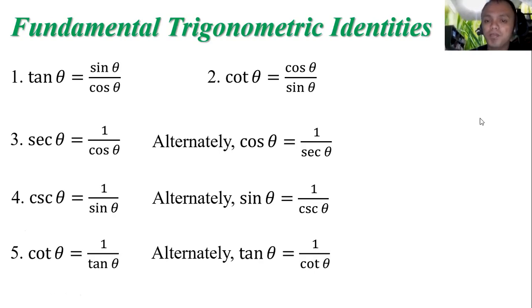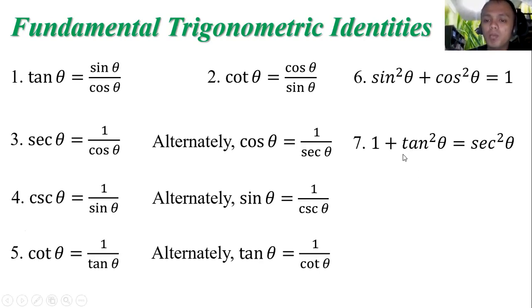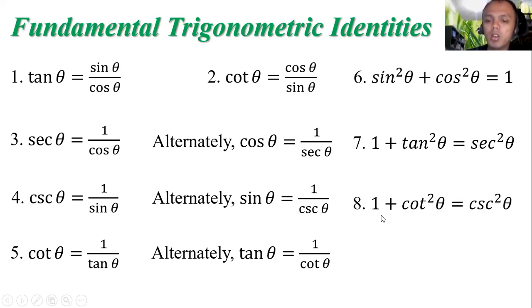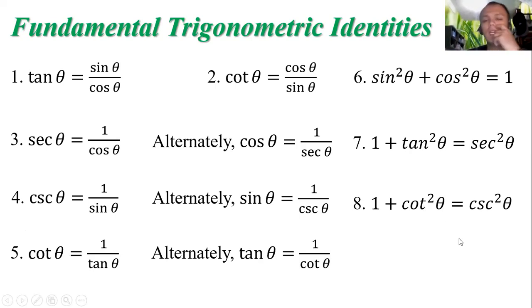We have sine squared theta plus cosine squared theta is equal to 1. And 1 plus tangent squared theta is equal to secant squared theta. Then 1 plus cotangent squared theta is equal to cosecant squared theta. These are the fundamental trigonometric identities.